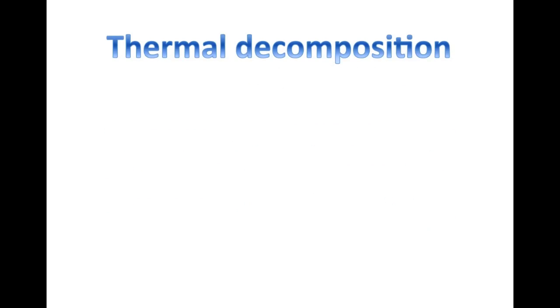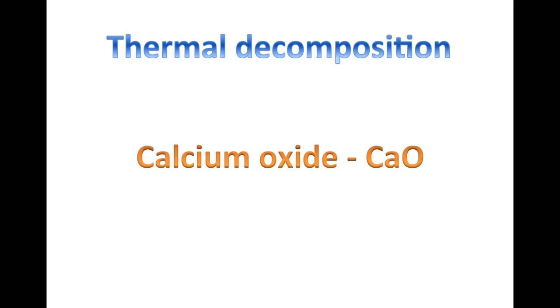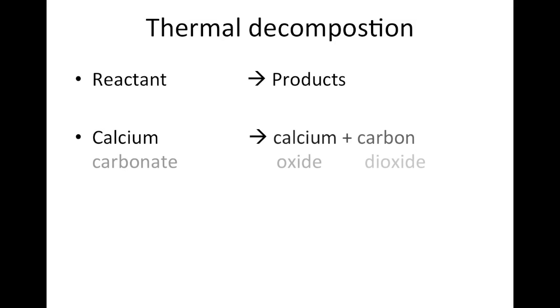The first important reaction we need to know about is thermal decomposition. As the name suggests, that's using heat to break down the substance. We have a single reactant, which then decays into two products, calcium oxide, that's lime, and carbon dioxide gas. Here's the reaction for that. A single reactant, calcium carbonate, reacts to produce two products, calcium oxide and carbon dioxide.